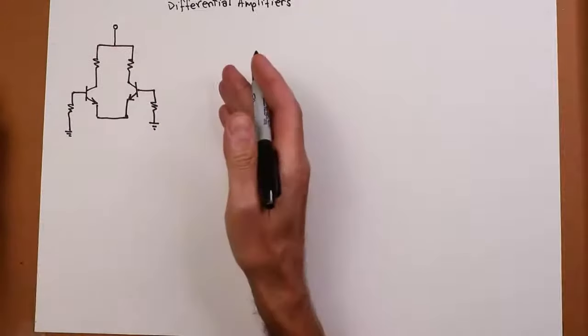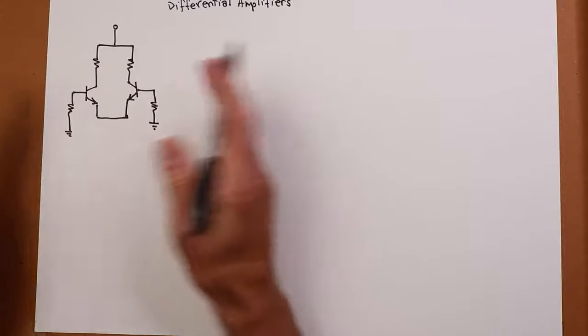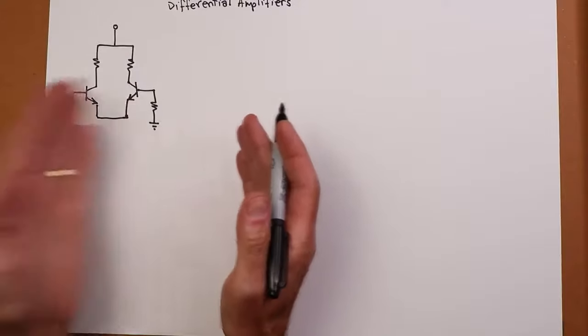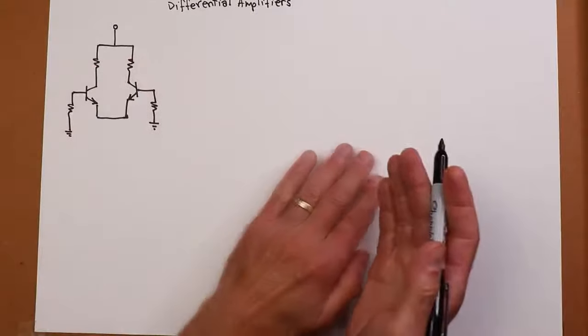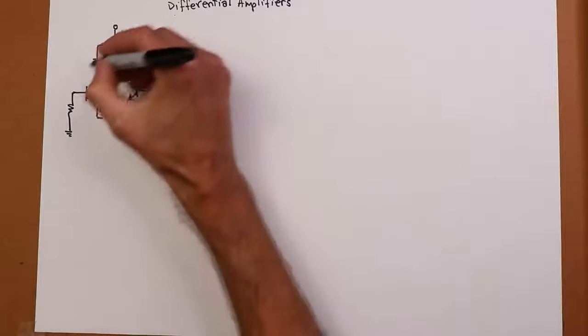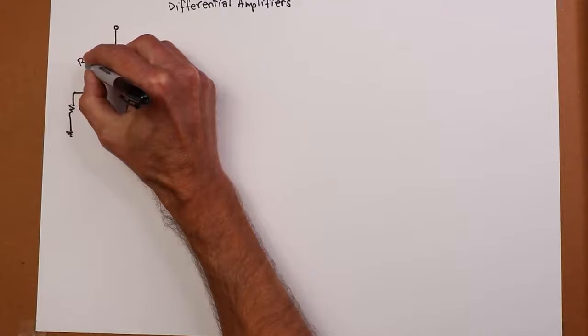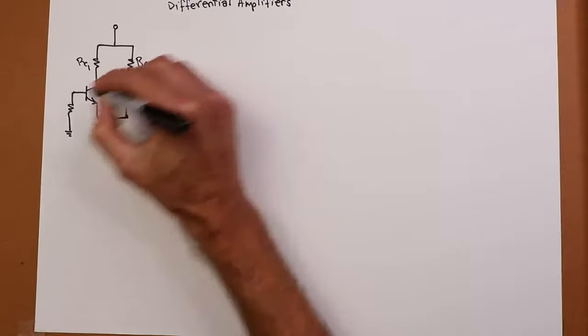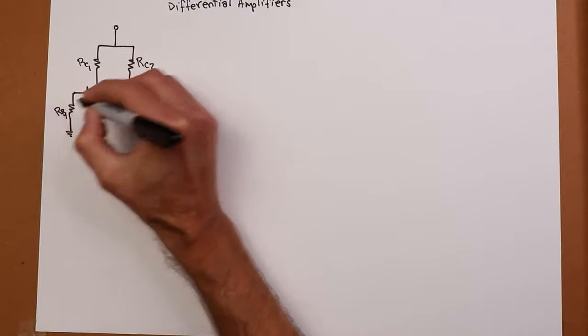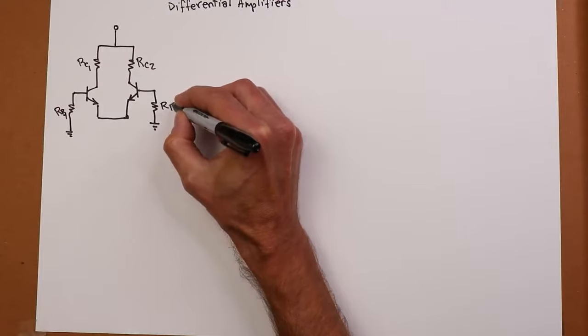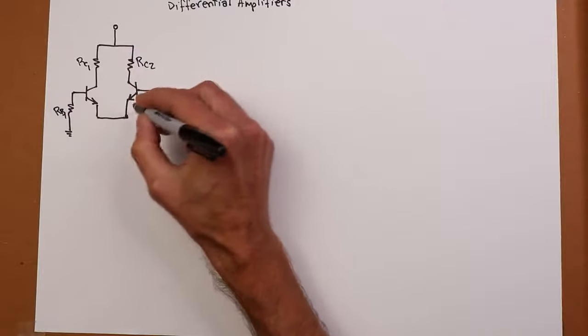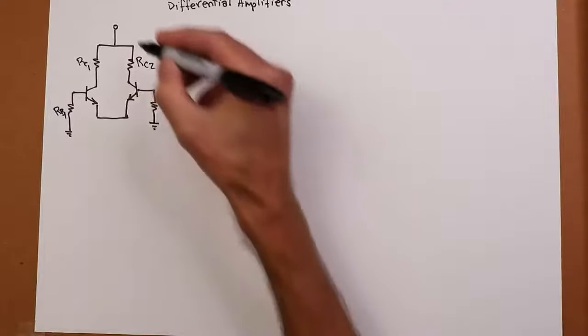So I have two transistors sort of mirror imaged here. Everything that's on the left-hand side is going to be identical to what's on the right-hand side. So this resistor, I'll call this the one side, RC1 is the same as RC2 and base resistor 1 is the same as base resistor 2. Transistor 1, Q1, is going to be the same as Q2. Ideally, it'll be a matched pair.